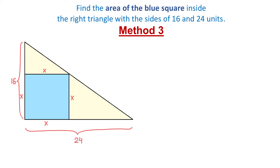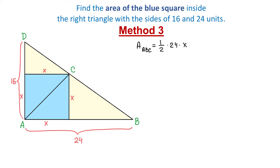With method 3, we draw a diagonal of the square connecting two points. This diagonal divides the large triangle into two smaller triangles: triangle ABC and triangle ACD. The area of triangle ABC equals one-half times base 24 times height x, which makes 12x. In triangle ACD, the base is 16 and the height is x, so its area equals one-half times 16 times x, which makes 8x.